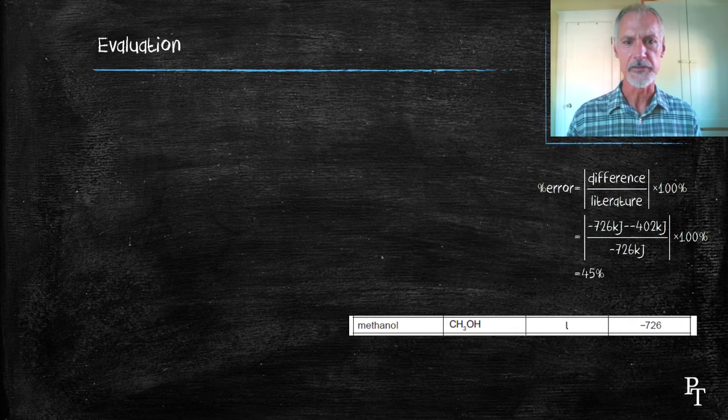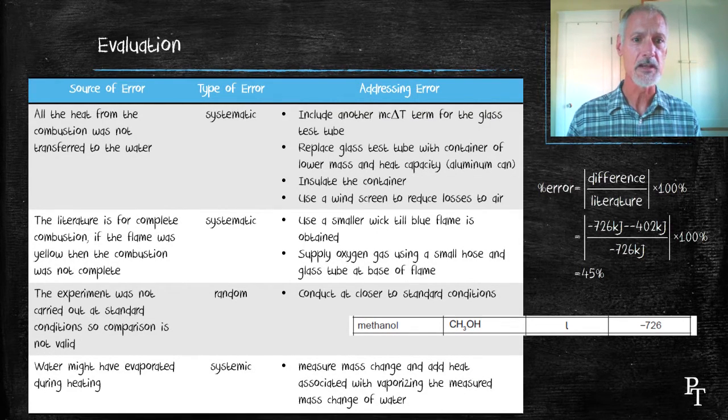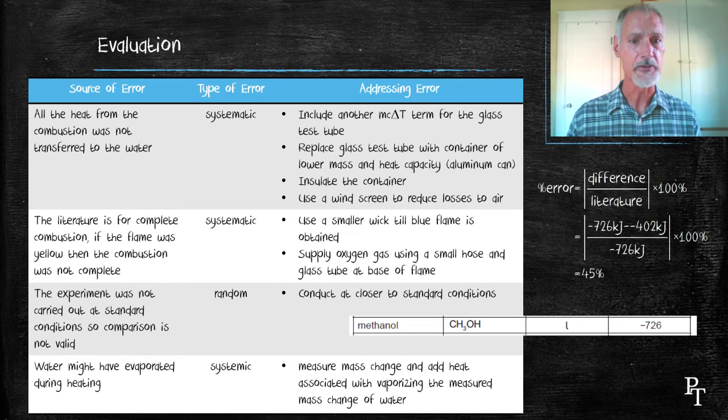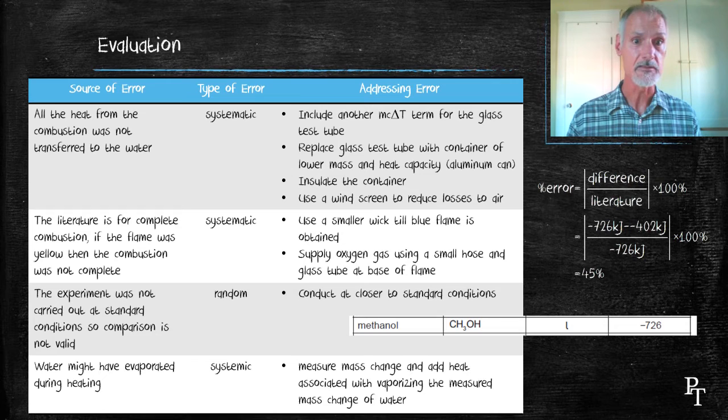Why am I off by so much? There's a host of things we could look at. First and foremost in my assumptions, the assumption that all the heat goes into the water perhaps is the biggest source of error. To improve that, there's a few things I could do. One is perhaps mass the piece of glass, look up the specific heat capacity of glass, and employ the temperature change of the glass, and add that term as well to the surroundings.